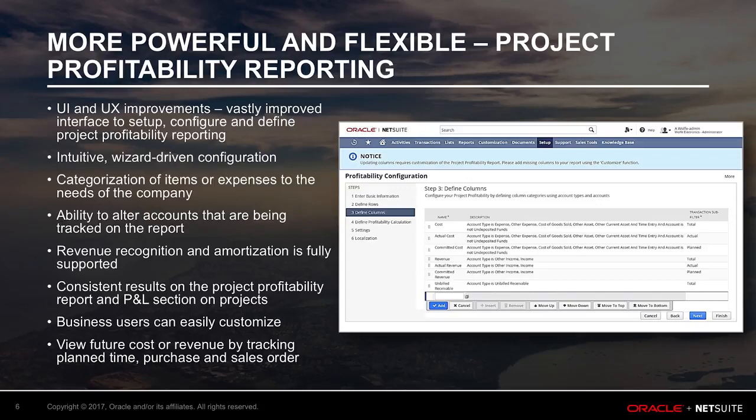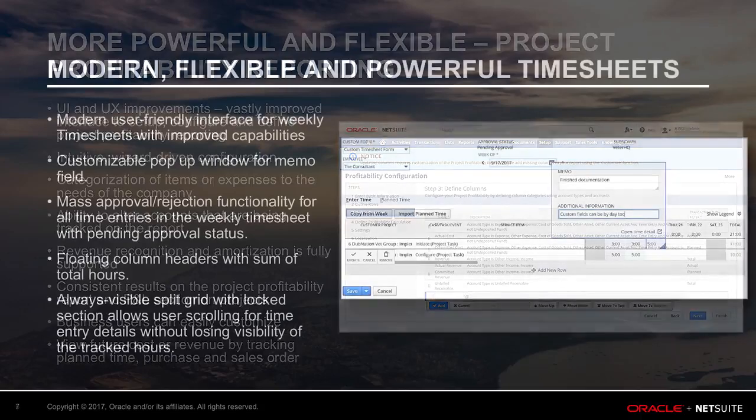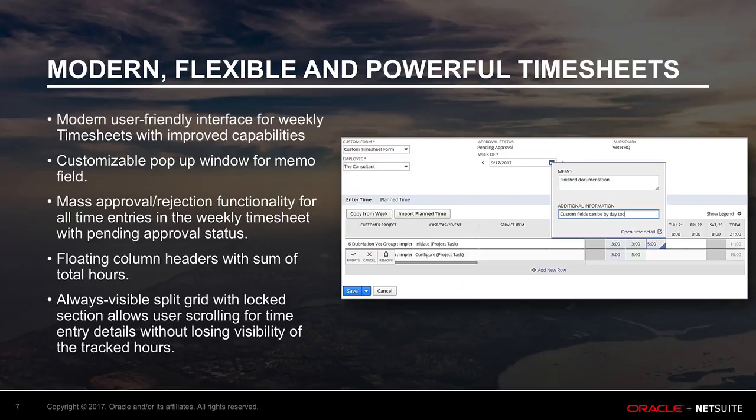For example, direct labor, indirect labor, and employee travel in one bucket — graphic design, photography, and media in another — giving you control to define the key elements of profitability: cost, revenue, and profit. The 2018-1 release also adds key features to one of the highest-traffic areas of NetSuite, the weekly timesheet.